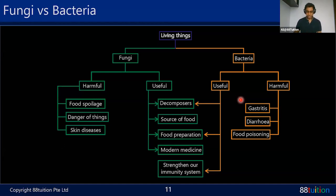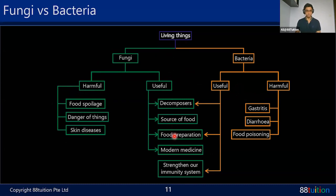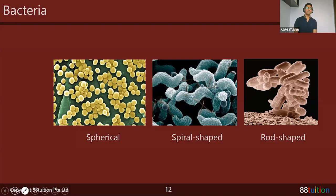Here's the scientific classification chart of fungi versus bacteria — the essence of today's lesson. On the fungi side: harmful properties include food spoilage, damage of materials, and skin diseases. Useful properties include decomposers, source of food, food preparation, modern medicine — remember penicillin and antibiotics — and strengthening our immune system. Now let's look at bacteria, which we haven't covered yet. We'll give bacteria a fair seven to eight minutes.